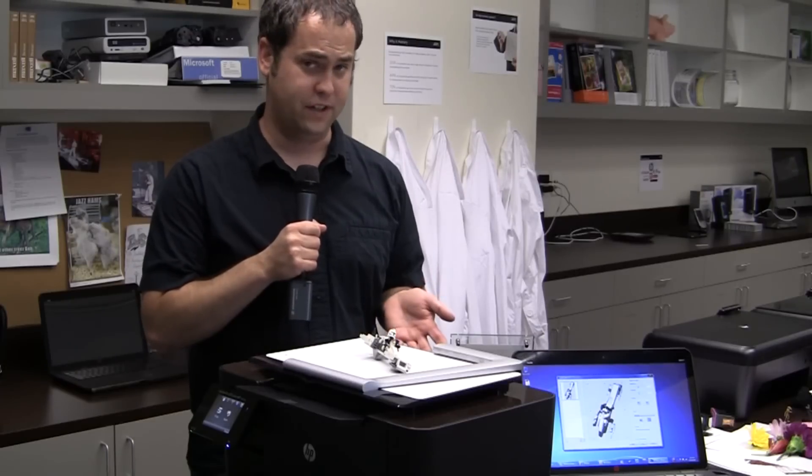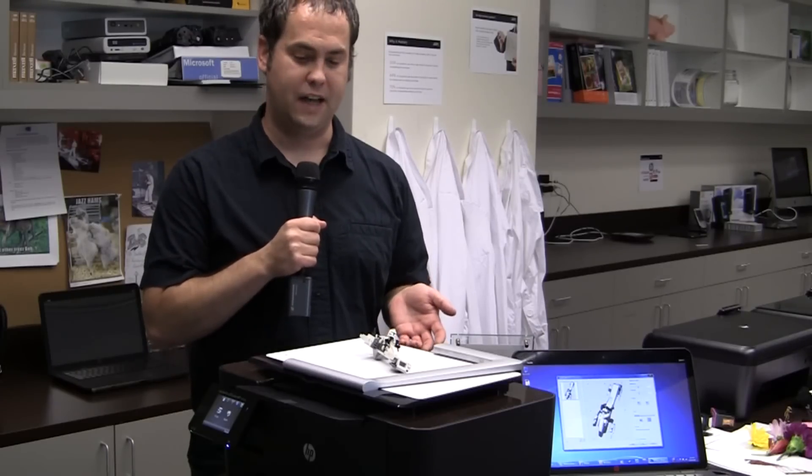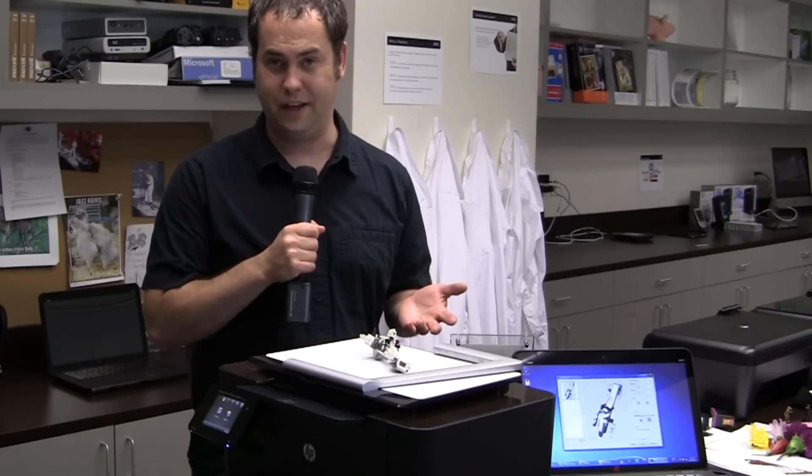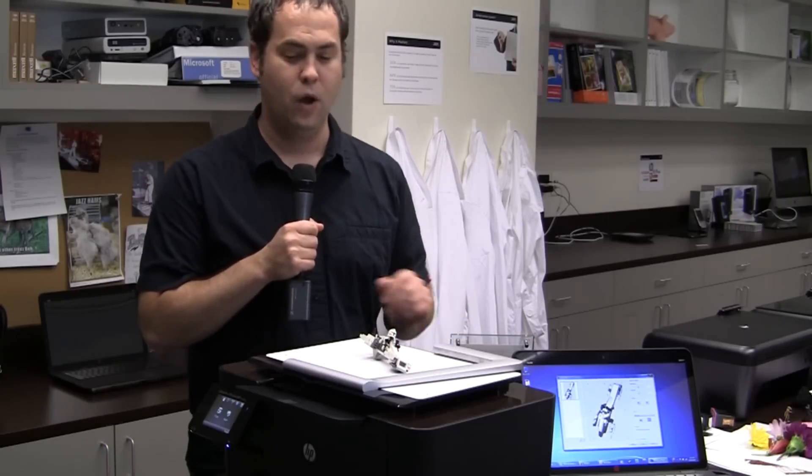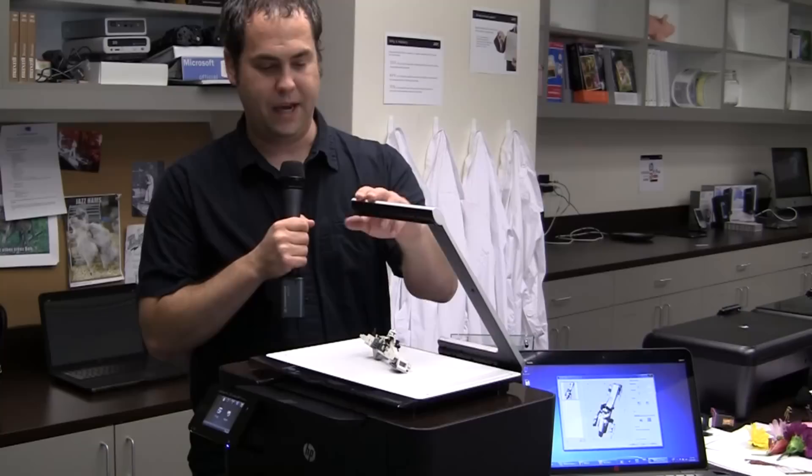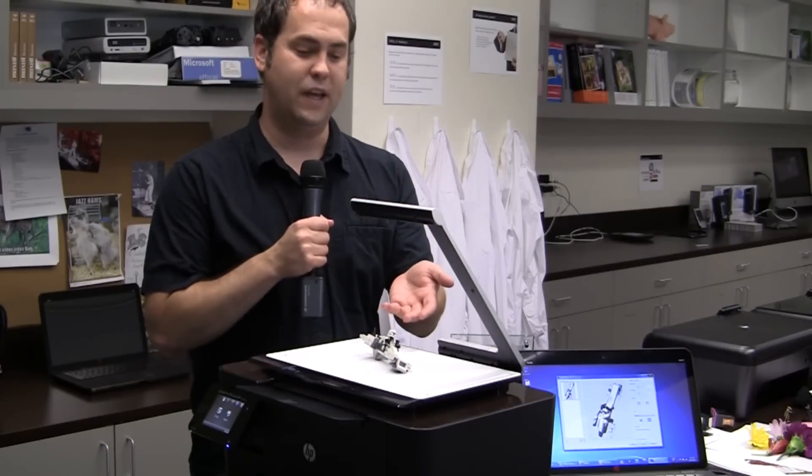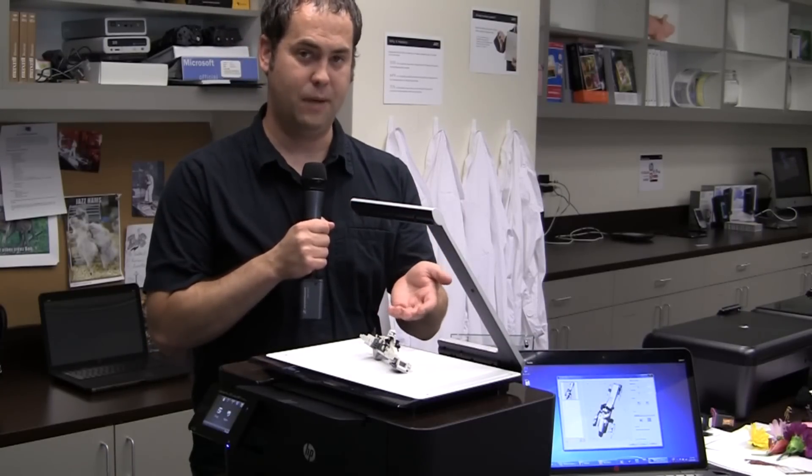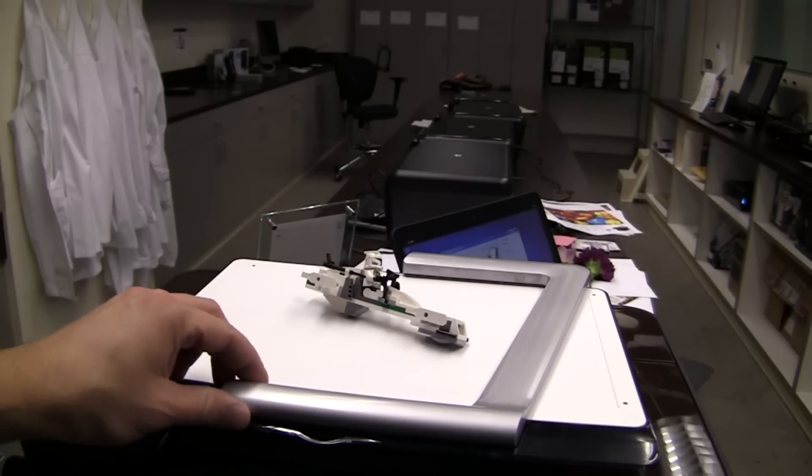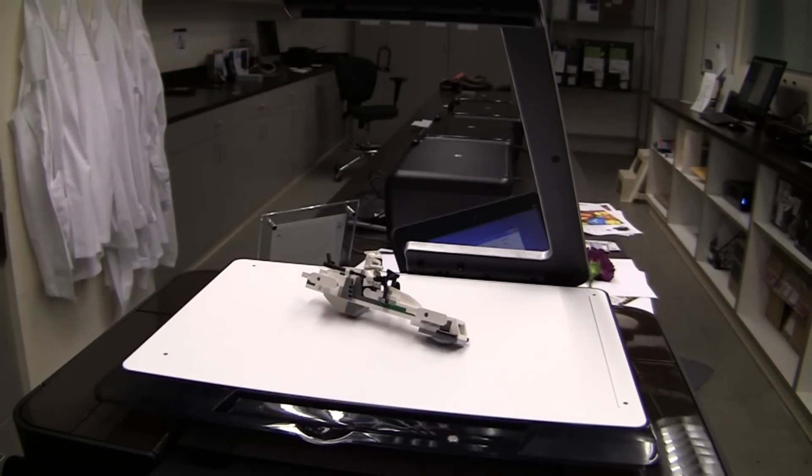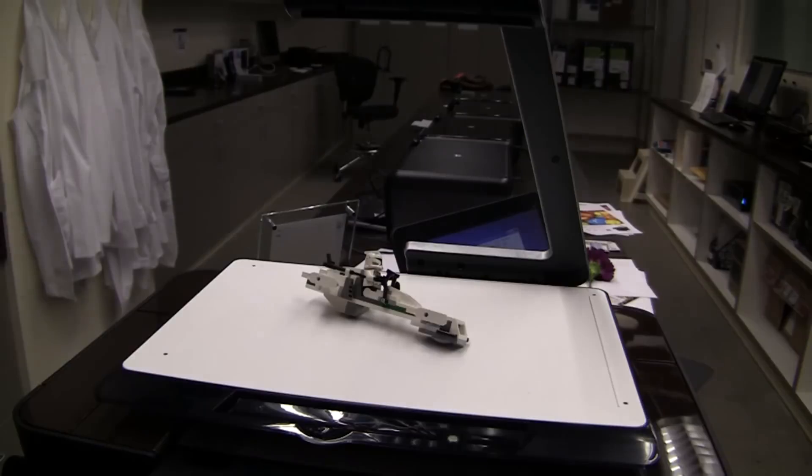This is a multifunction device from HP that allows you to both print anything in full LaserJet color, or when you raise this arm and place an object underneath it, you can scan 3D objects and then print them out on paper. You fold up this arm which has an 8 megapixel camera, and the camera is going to take a series of pictures with various light flashes.